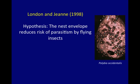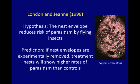As you may recall, their hypothesis was that the nest envelope of a particular wasp species reduced the risk of parasitism by a certain kind of flying parasite — these were forid flies. Their prediction was that if they manipulated the nests, or removed the nest envelopes experimentally, the nests that had that treatment would show higher rates of parasitism by these forid flies than would control nests that had not been manipulated.